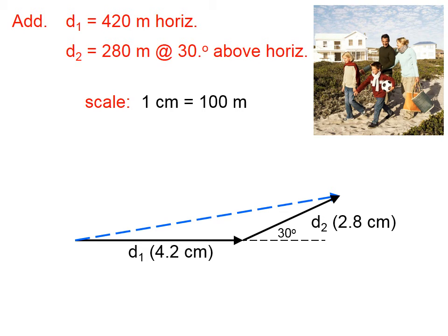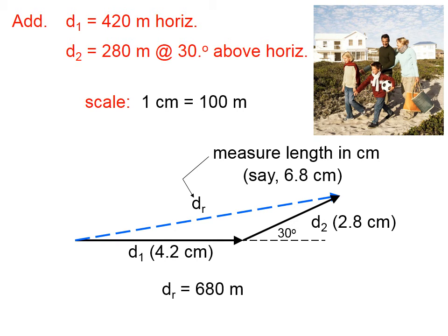The resultant, then, is drawn by going back to where we started and ending where we ended. We will then use our ruler and our scale to find the length of that resultant displacement vector. Let's say we measure it to be 6.8 centimeters, which means the length of our resultant, according to our scale, will be 680 meters.